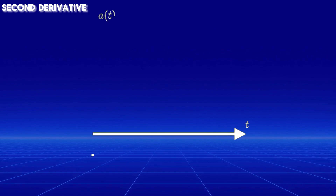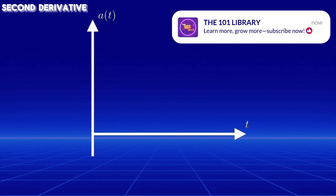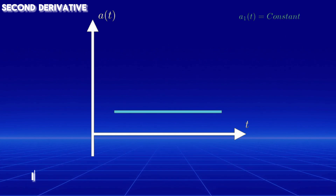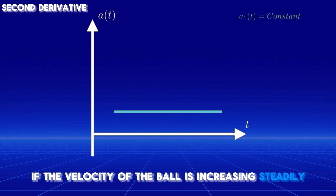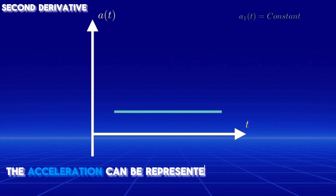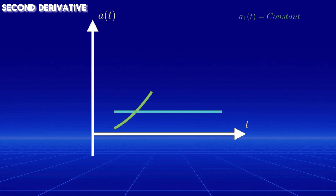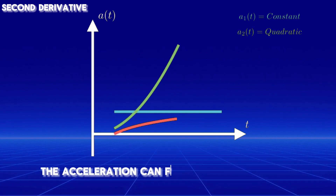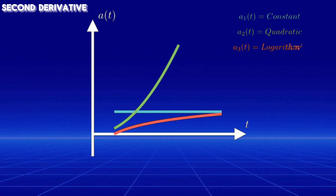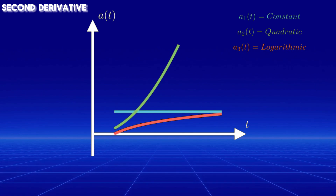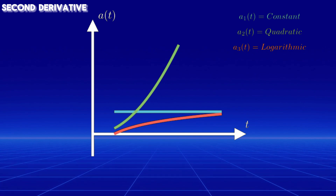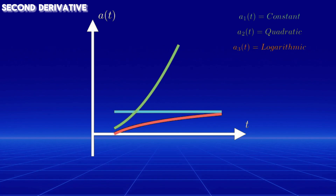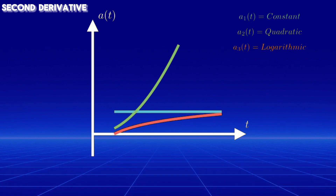Graphically, the second derivative provides insights into how the first derivative behaves. For example, if the velocity of the ball is increasing steadily, the acceleration can be represented as a constant value. If the velocity increases nonlinearly, the acceleration can follow various patterns, as demonstrated by these two examples: quadratic increase or logarithmic increase. From this, we see that the second derivative is crucial because it shows us how the first derivative of a function is changing.